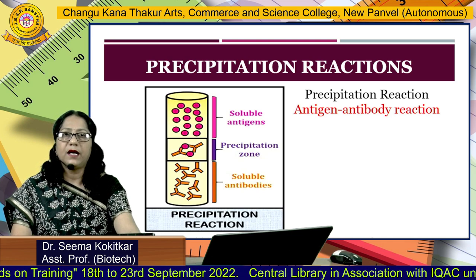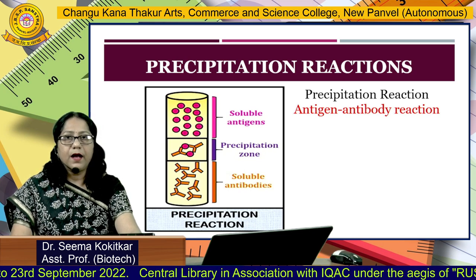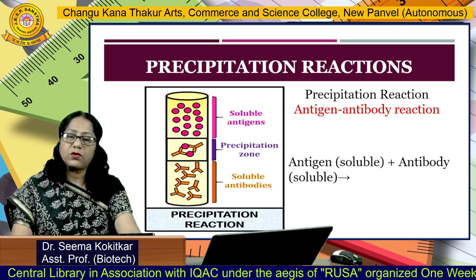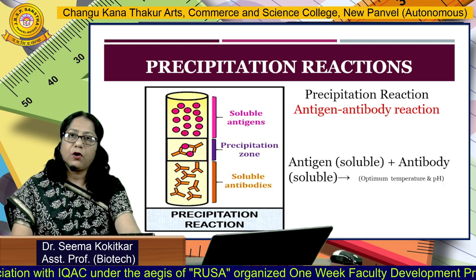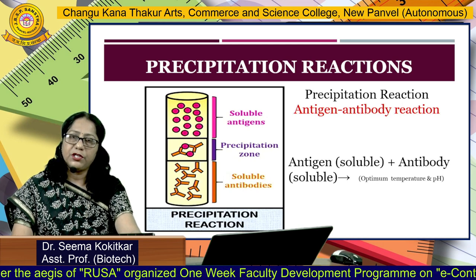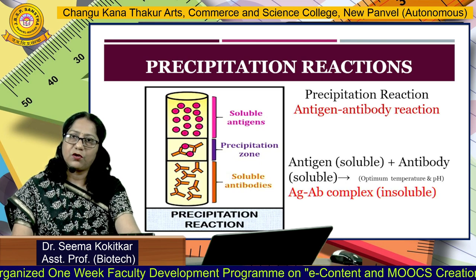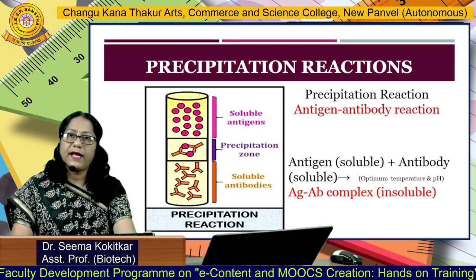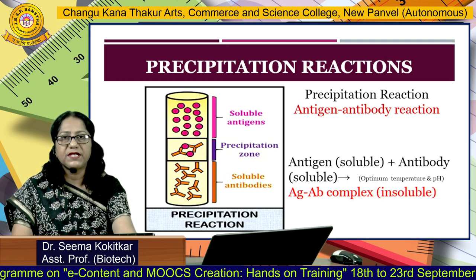Precipitation reactions are basically based upon antigen-antibody interactions. How do precipitation reactions basically occur? When a soluble antigen reacts with antibody in the presence of optimum conditions of temperature and pH, there is formation of an antigen-antibody complex, and this antigen-antibody complex is insoluble. So you can see here that when soluble antigen and soluble antibody react with each other, we will be getting a precipitation zone.